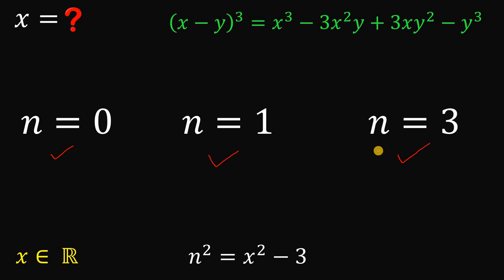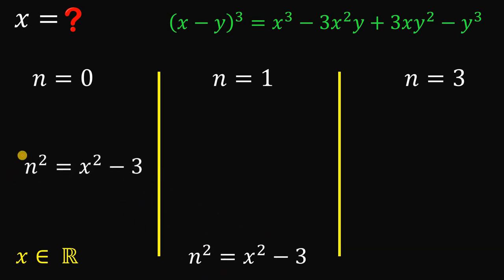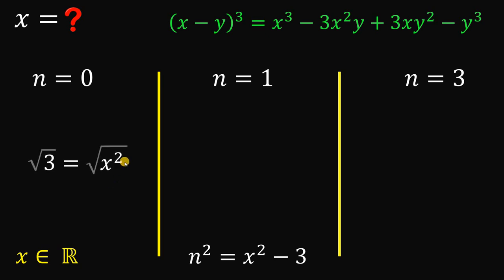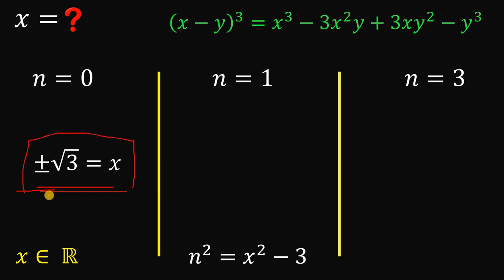We can now solve for x using n squared equals x squared minus 3. For case 1, n equals 0: substituting gives 0 squared equals x squared minus 3, so 0 equals x squared minus 3, meaning x squared equals 3. Taking the square root of both sides — since the exponent is even — gives two possible values: x equals positive or negative square root of 3.